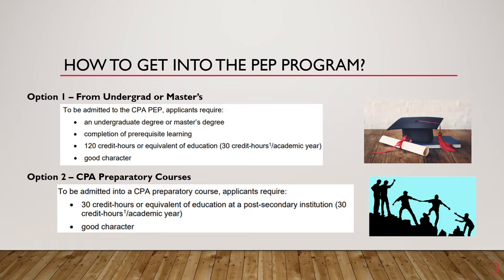There are two ways to enter the CPA PEP program. The first way is through completing an undergraduate degree or master's program. This method of entering the PEP program is most common, and if you are enrolled in a four-year undergraduate program majoring in accounting, you're most likely to fulfill this requirement. Later on, I will explain how to double check if you have all the required courses to enroll into the PEP program.